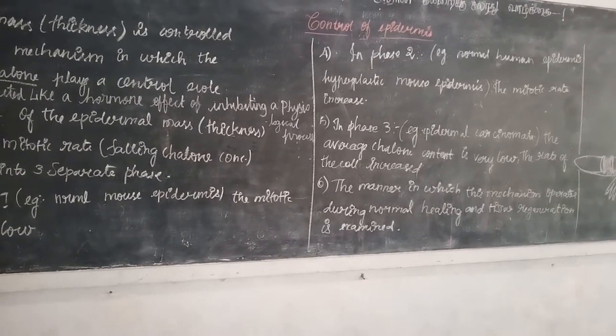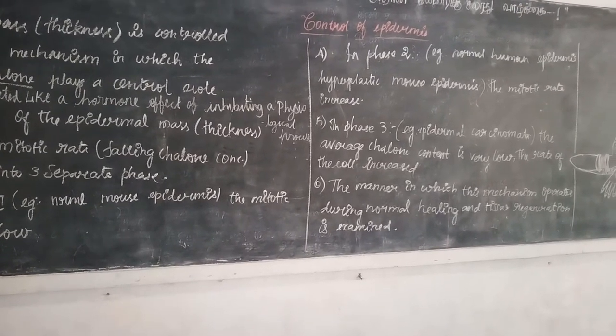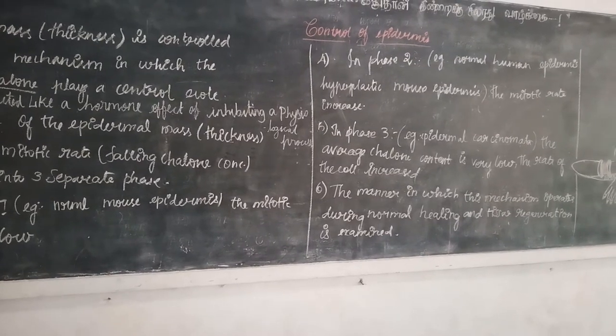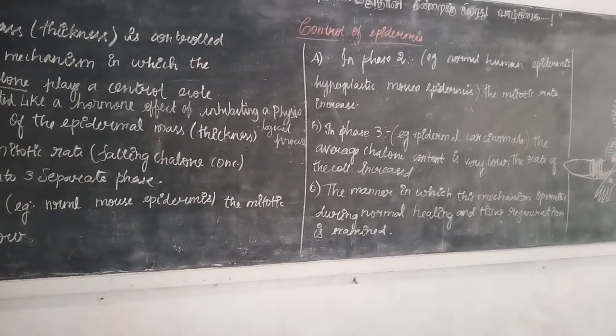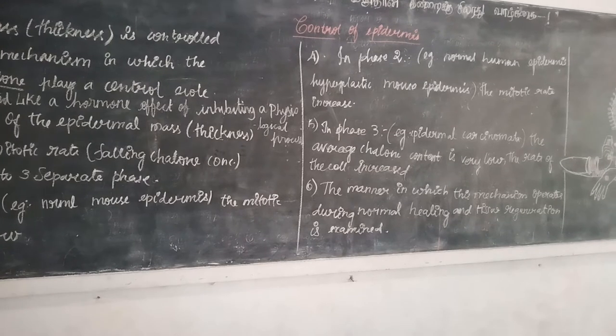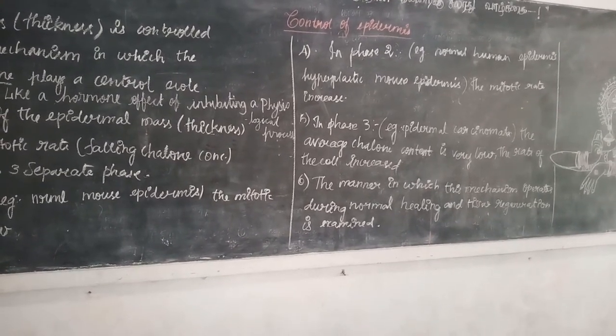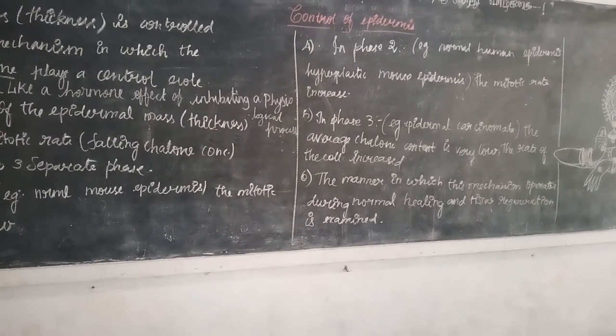In this process skin just grows and no doubling is entered. Here the etching of process is not known. In phase 3, example epidermal corneumate, the average cologne control is very low. Here the inhibition of physiological process of cologne is very low.